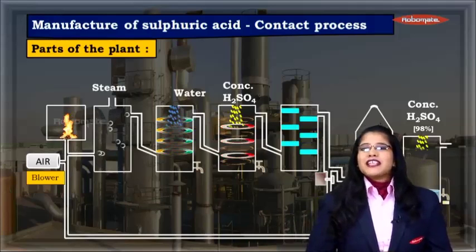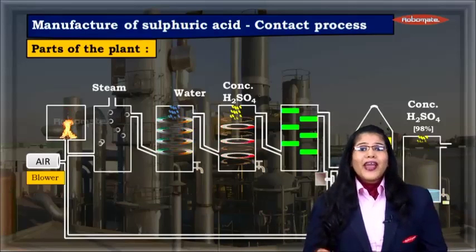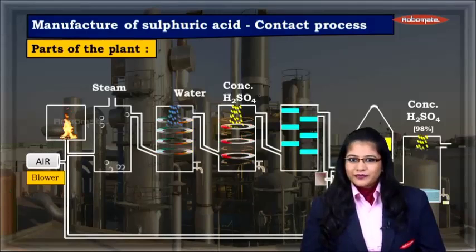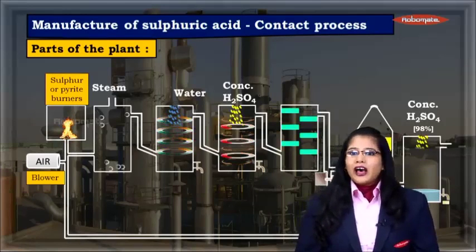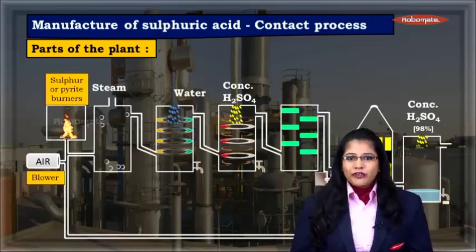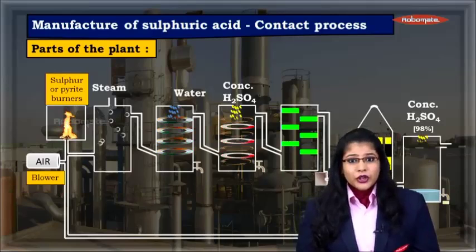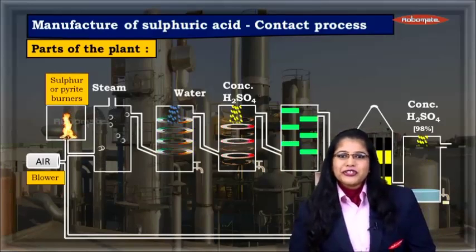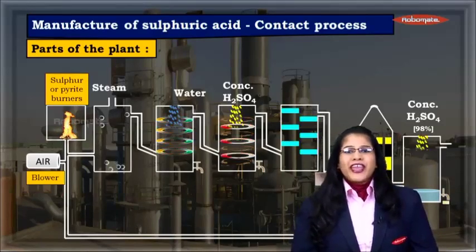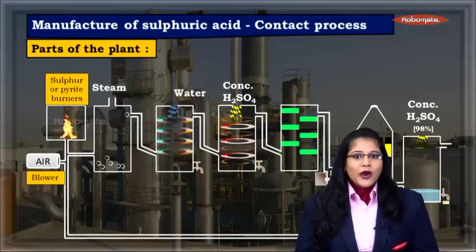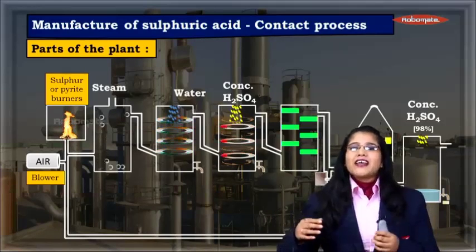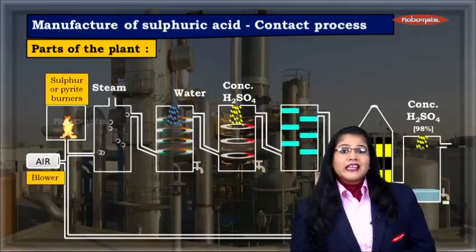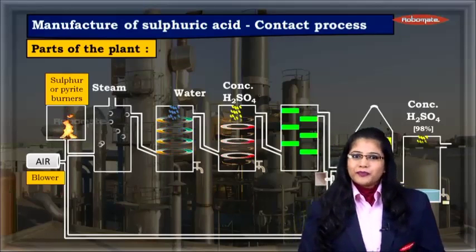First on the left hand side we have the blower where air is pumped inside the plant. We also have the iron pyrite or sulphur burners where sulphur or iron pyrite undergo oxidation in the presence of air to form sulphur dioxide.